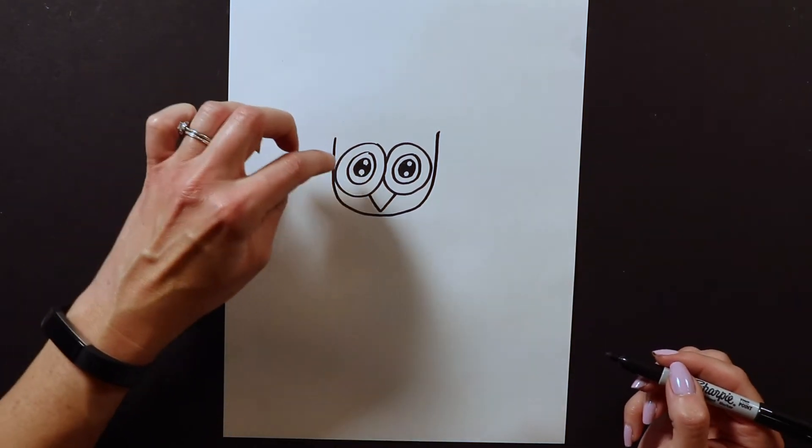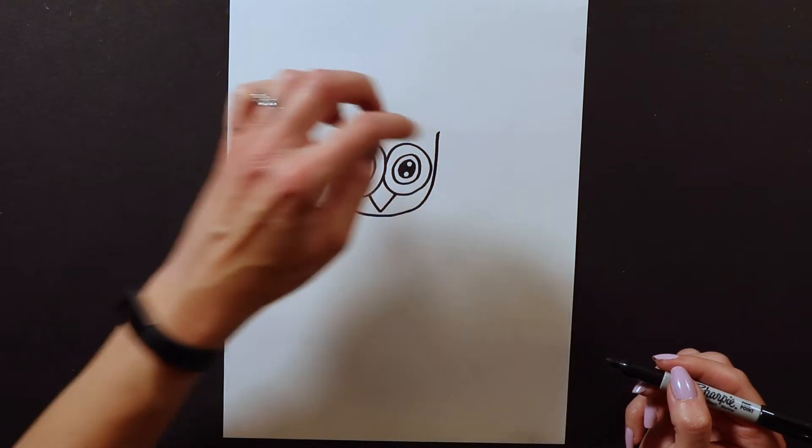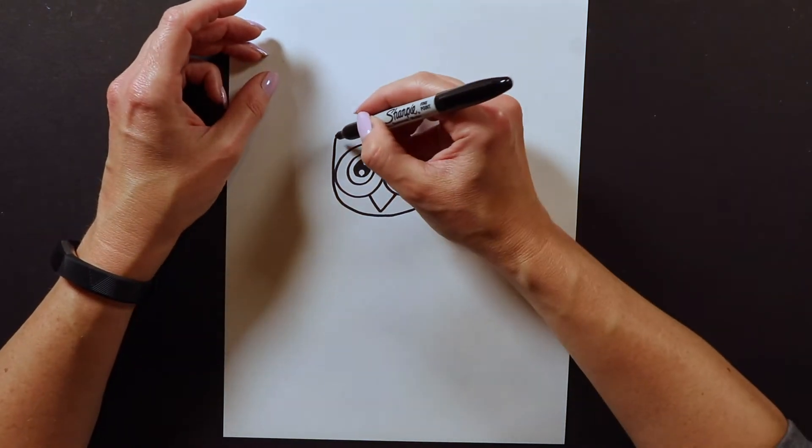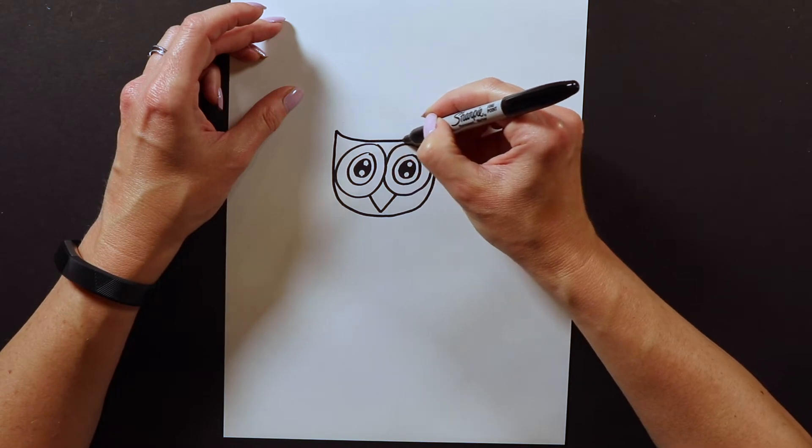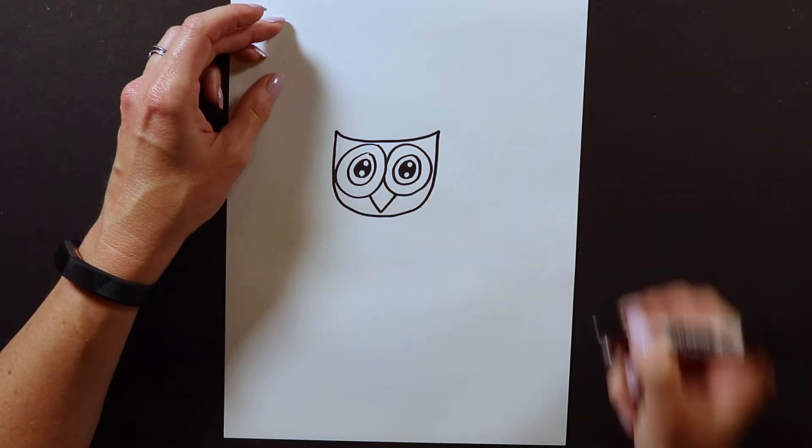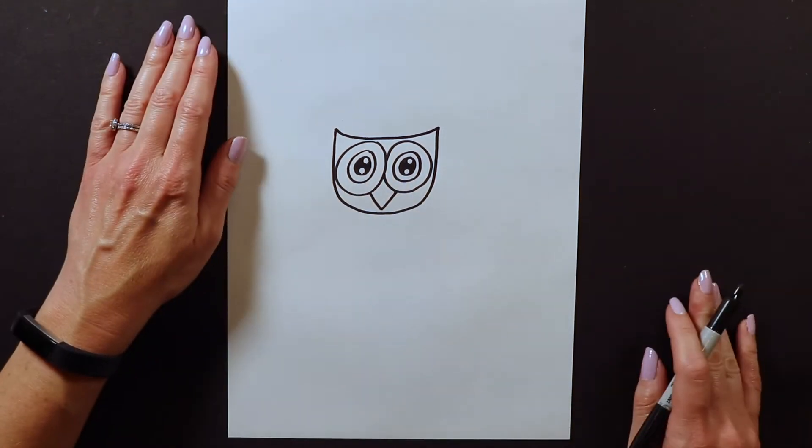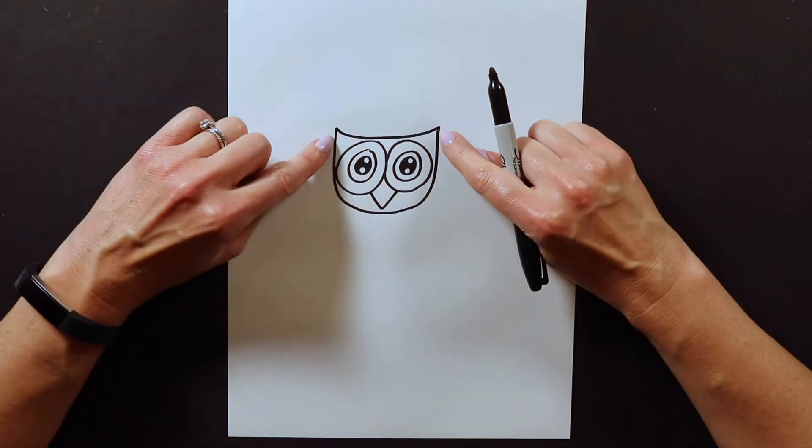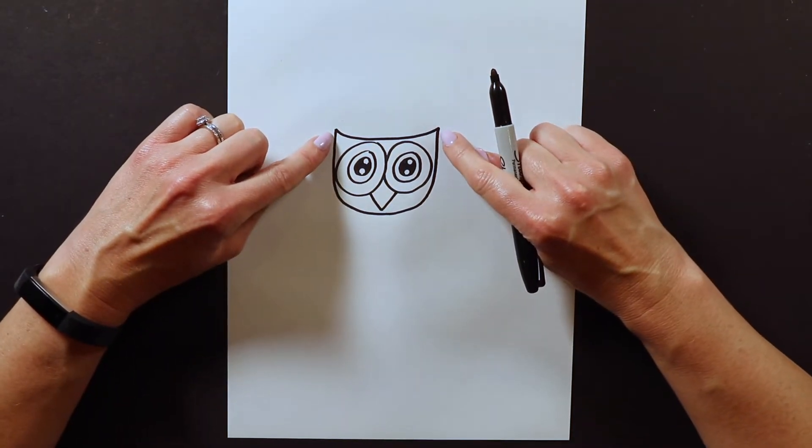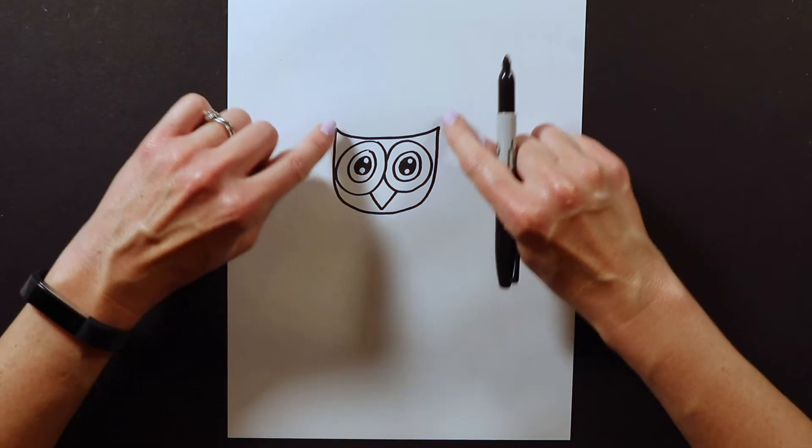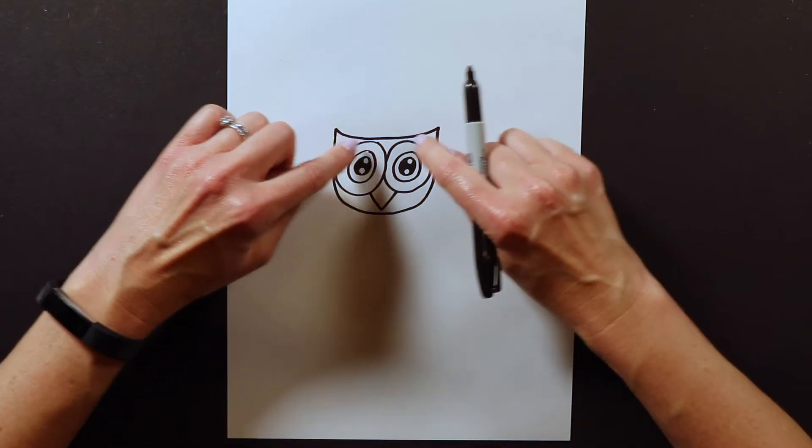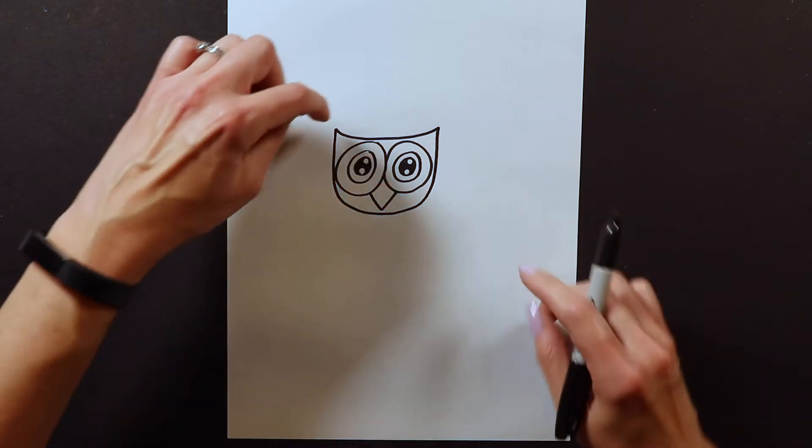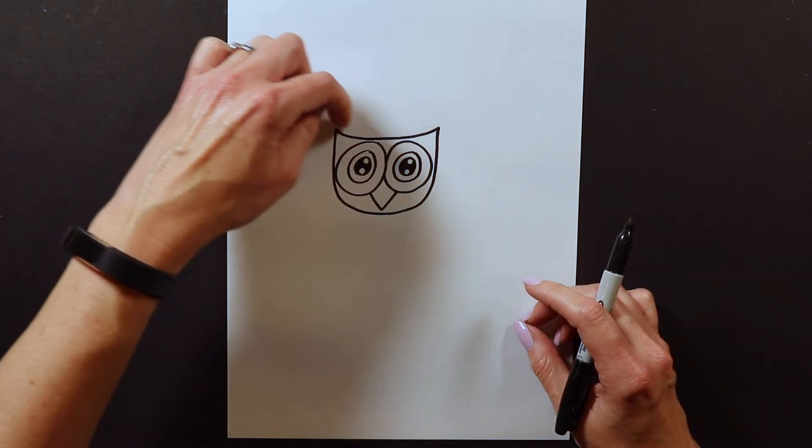After we have that letter U for the bottom of the head we're gonna do the top of the head. I'm just gonna do a swoop like that, just like a slight curve. Owls have pointed, I don't want to call them ears, but on the sides of their head they're kind of pointed. They have little points on the side of their ears. That's why I made it kind of curve down the top of the head.